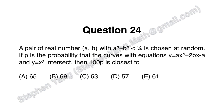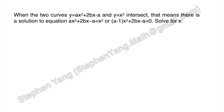Now let's get into the solution. When these two curves y equals ax squared plus 2bx minus a and y equals x squared intersect, that means there is a solution to ax squared plus 2bx minus a equals x squared, which is equivalent to (a minus 1) times x squared plus 2bx minus a equals 0.